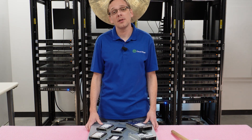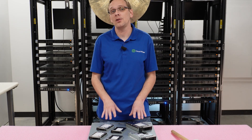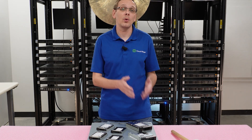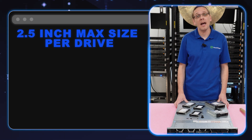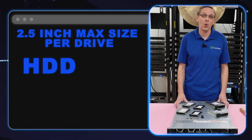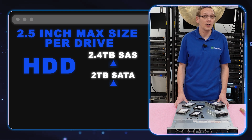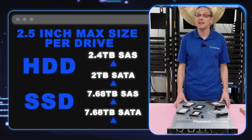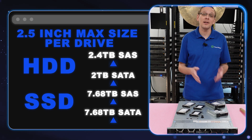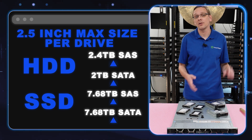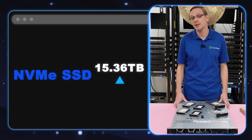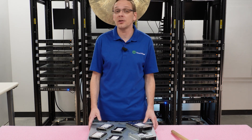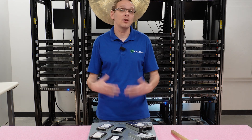The different sizes depend on what kind of chassis you have and whether you're using a 2.5 inch small form factor or 3.5 inch large form factor drive. For 2.5 inch drives: a SAS hard drive maxes out at 2.4 TB, a SATA hard drive at 2 TB. A SATA or SAS solid state drive gets you 7.68 TB — so not only is it faster, it has more scalability. With NVMe, you can get up to 15.36 TB, making it the largest and fastest option.